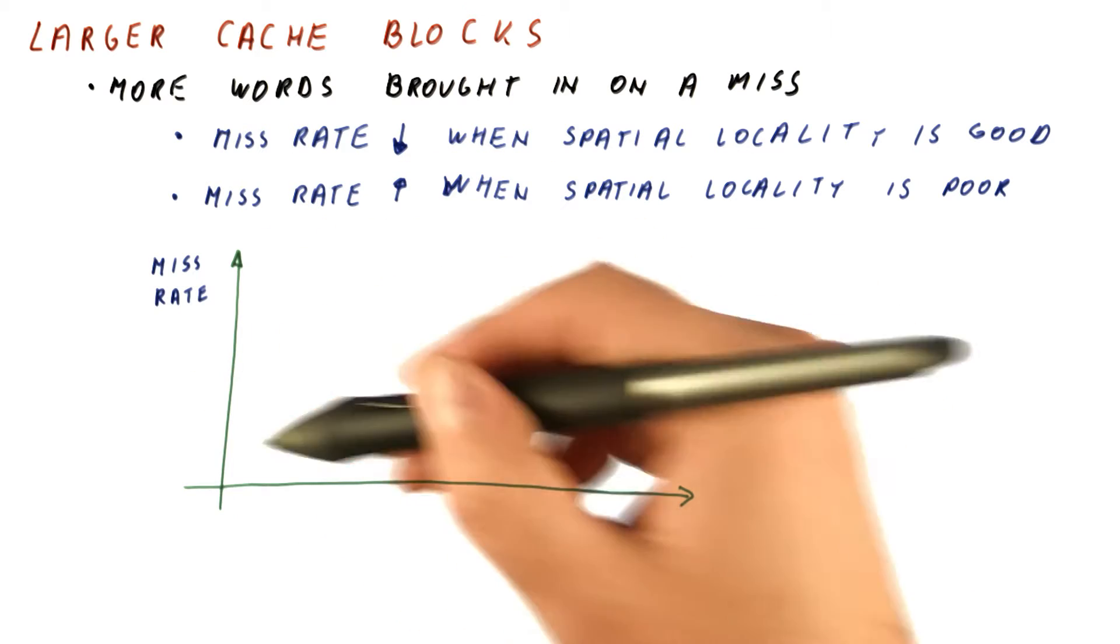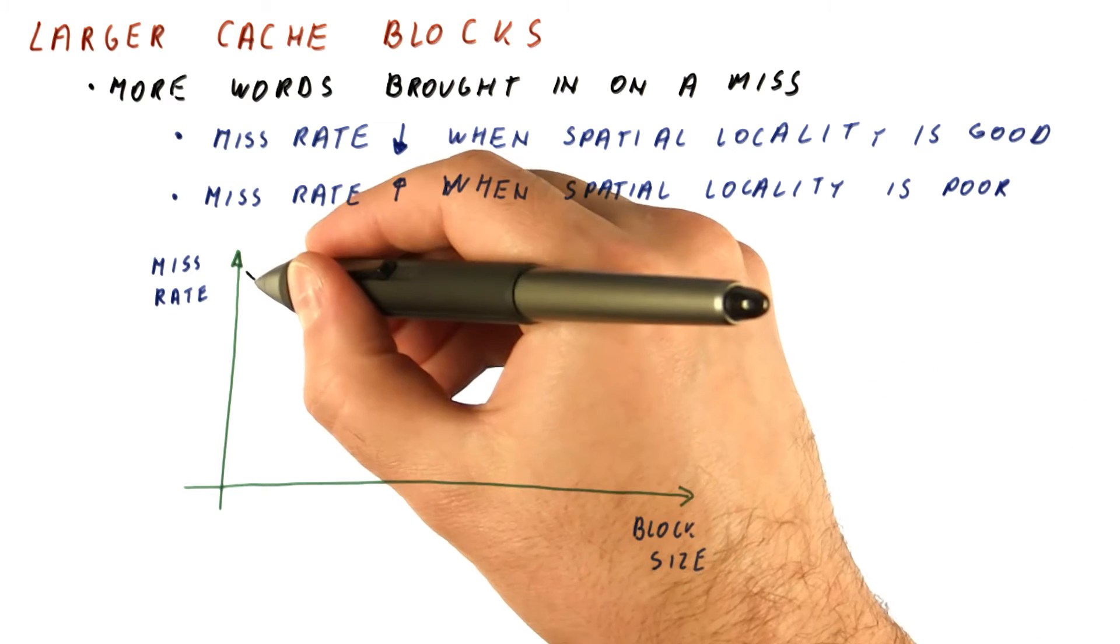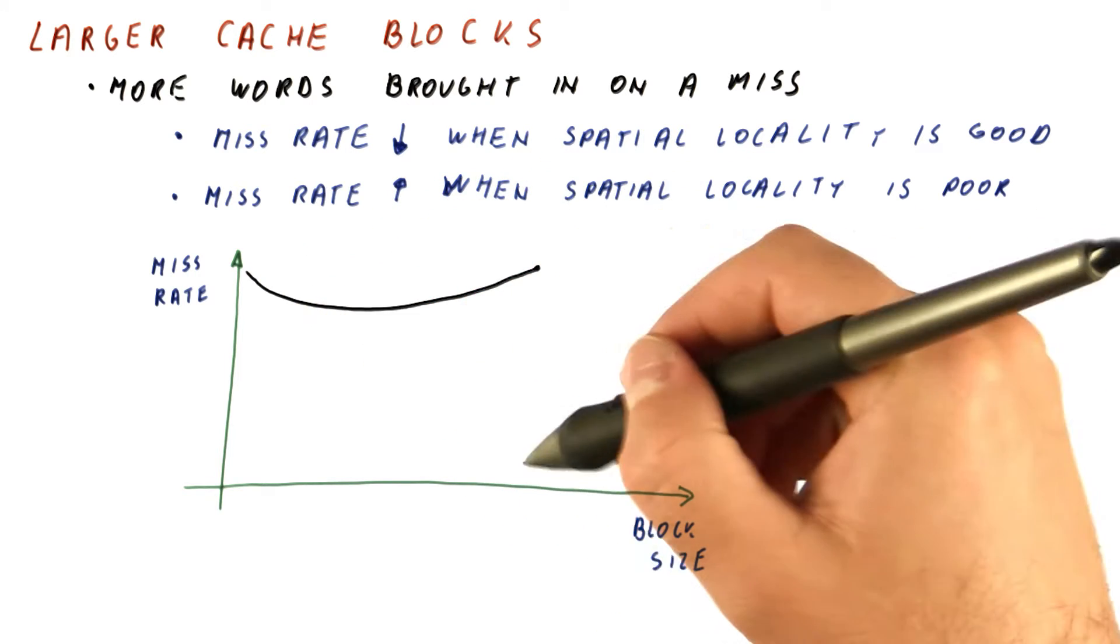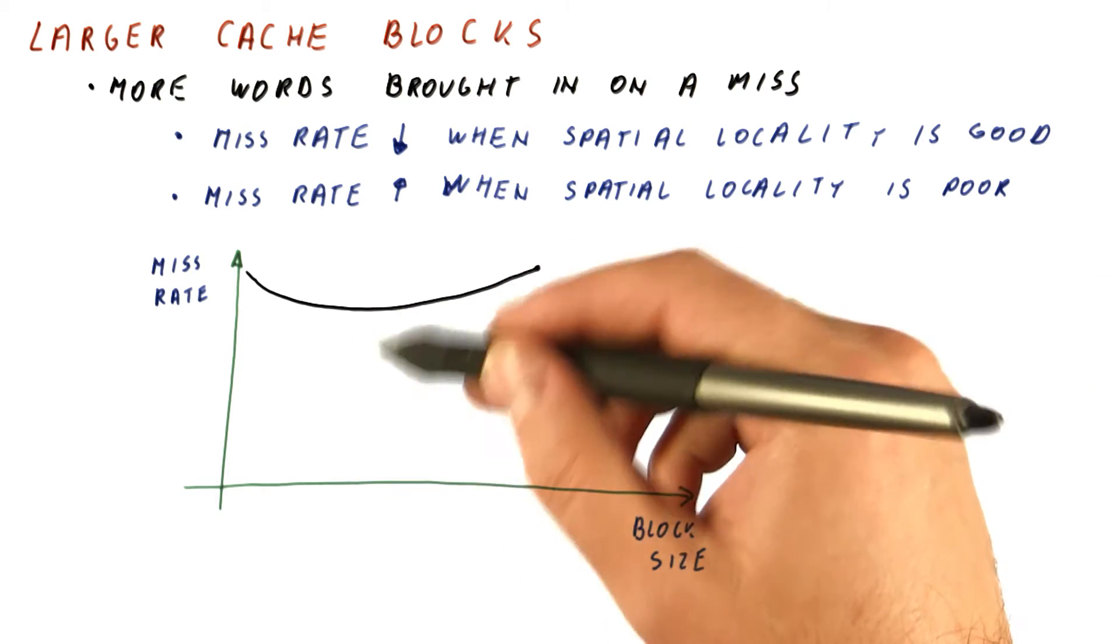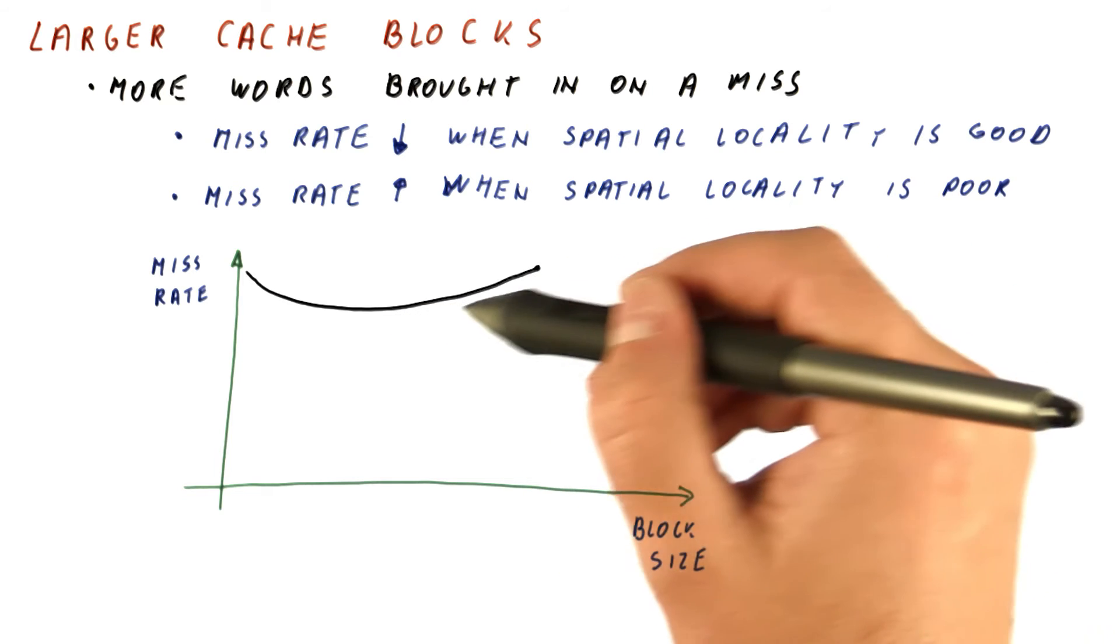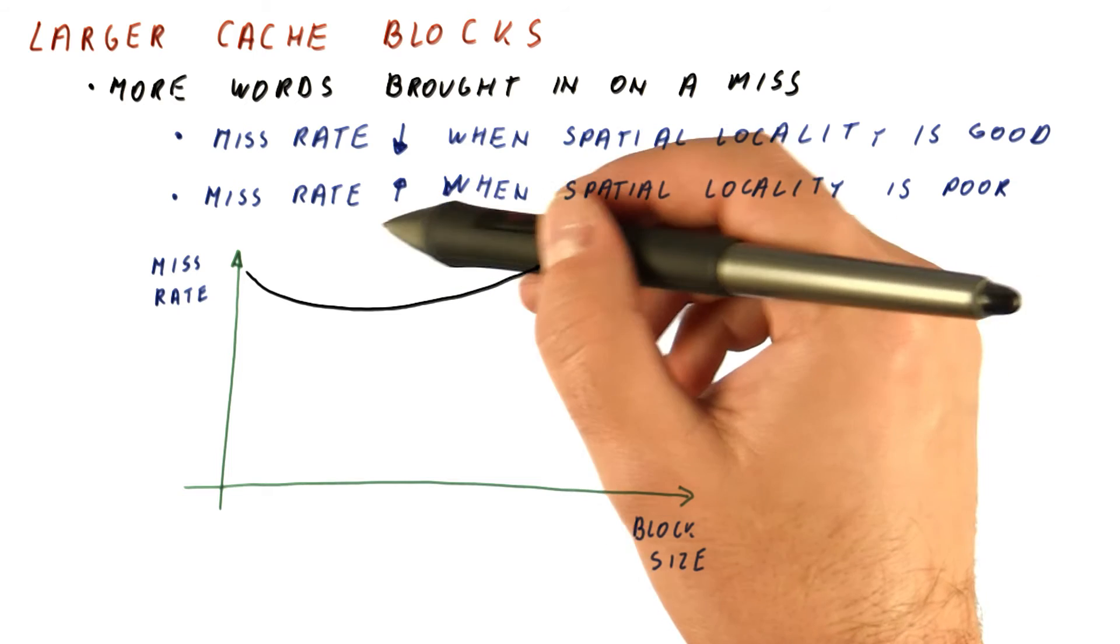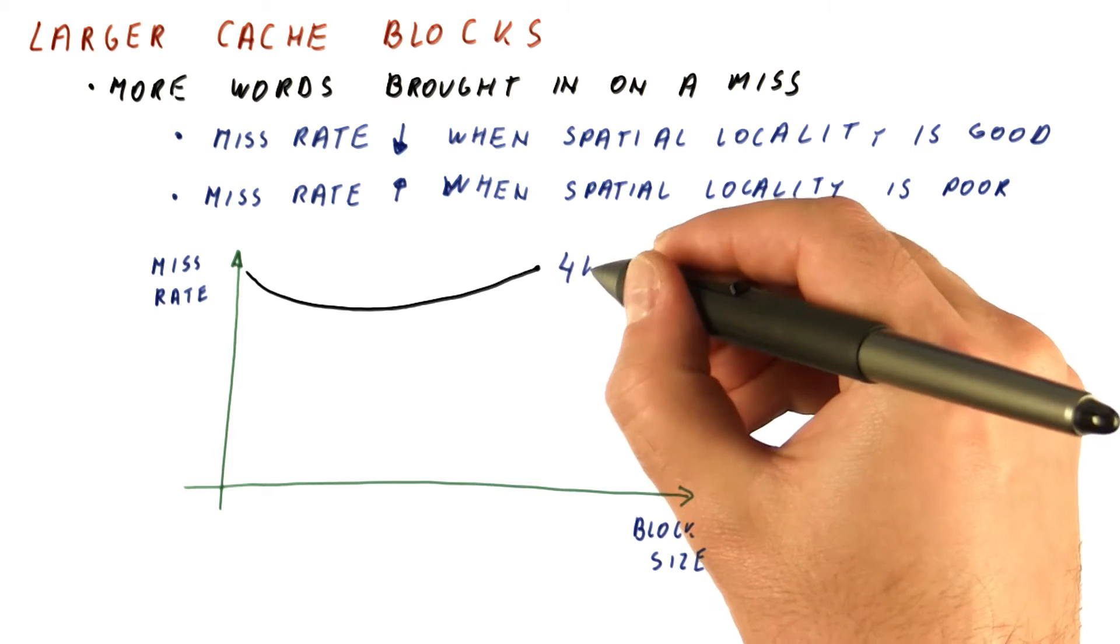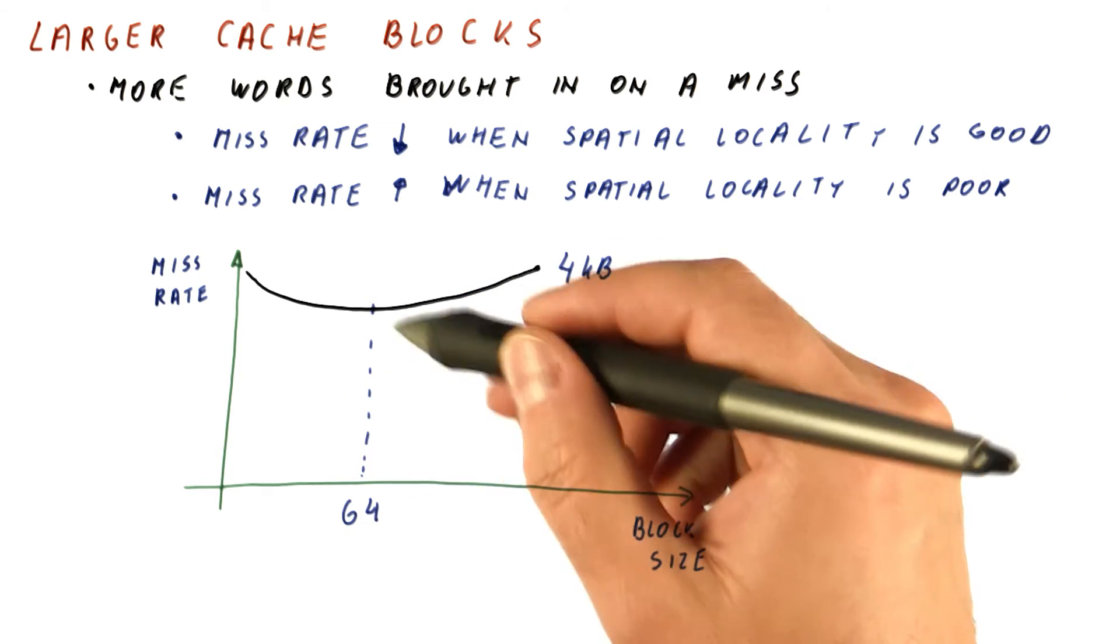If we plot the miss rate and how it changes as the block size changes, for a small cache we might get something like this, where the miss rate drops as we increase the block size, but then starts increasing as we exhaust the spatial locality that the cache can support. For a 4-kilobyte cache, this might happen, for example, with a block size of 64.